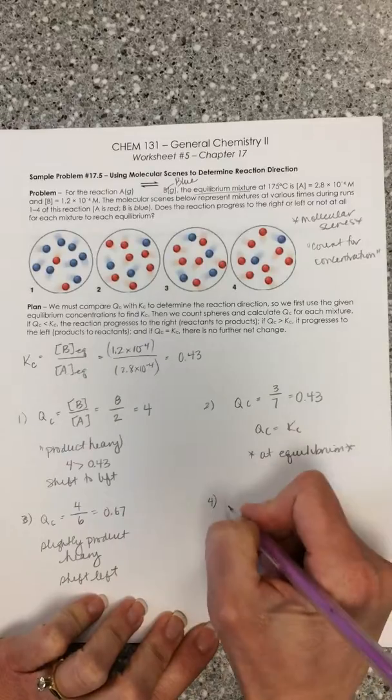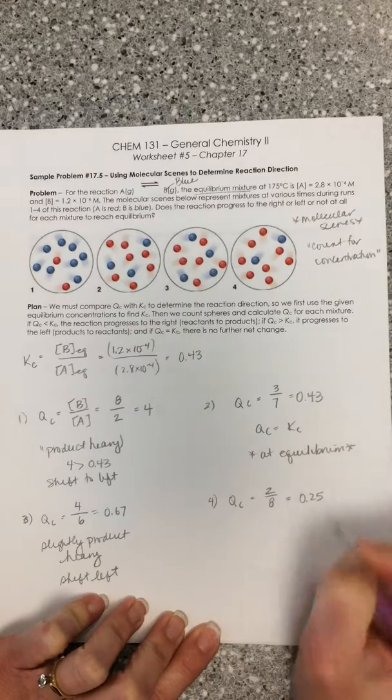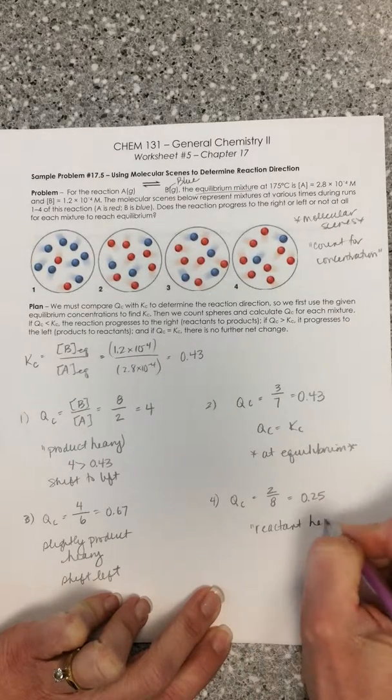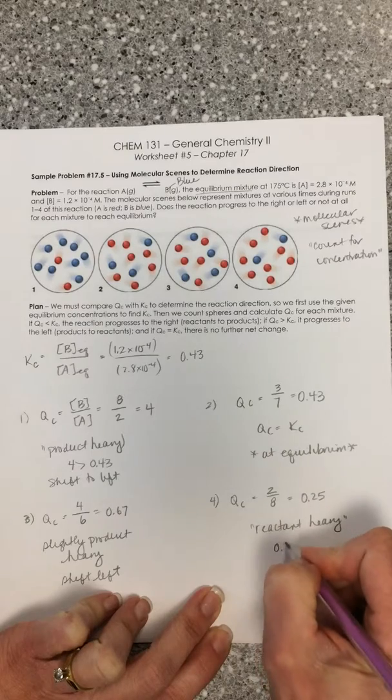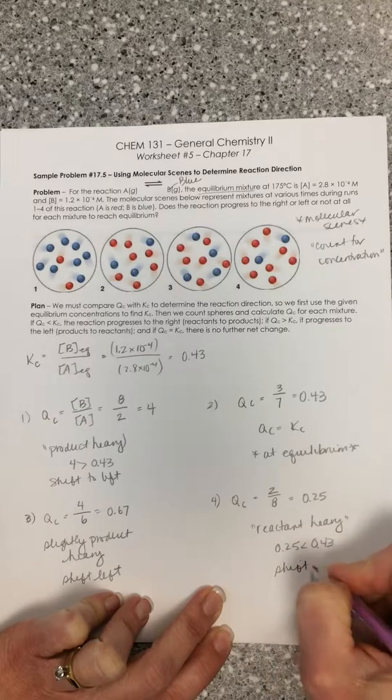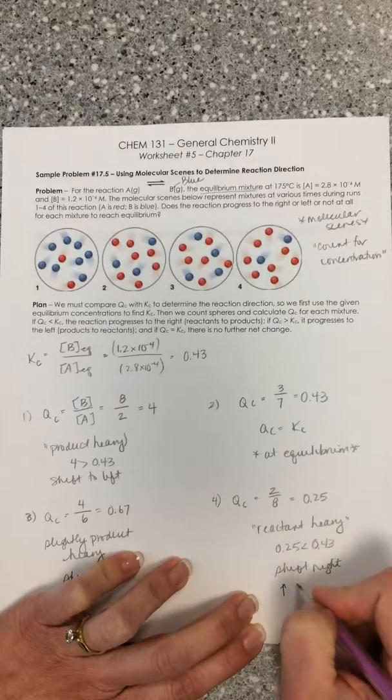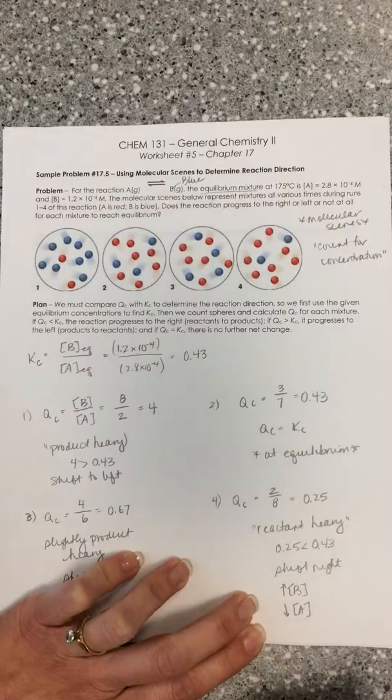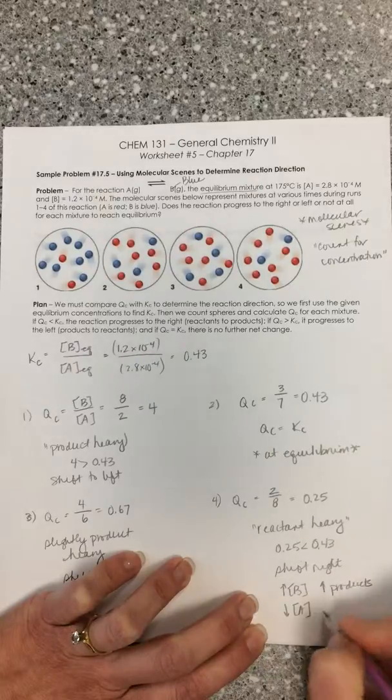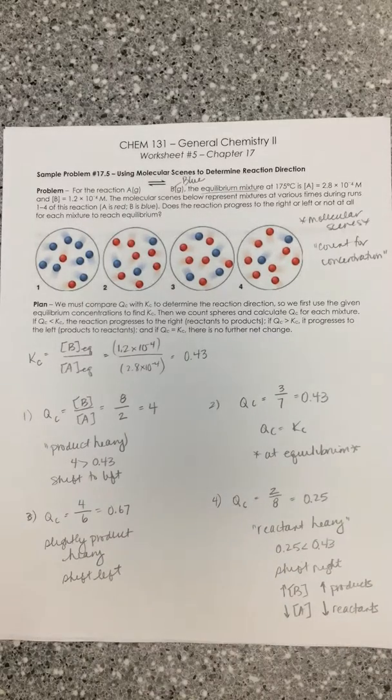Last part for this problem, QC for molecular scene four is two over eight. This is 0.25. At this point, we are reactant heavy. Reactant heavy because 0.25 is less than 0.43. In this case, our reaction will shift right. So again, asked another way, we would increase the concentration of B. We would decrease the concentration of A. We would increase the concentration of products. We would decrease the amount of reactants. So all different ways that we could answer the same question.